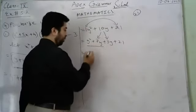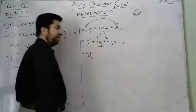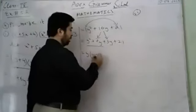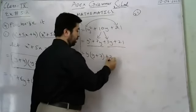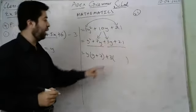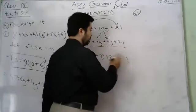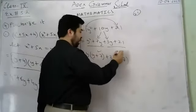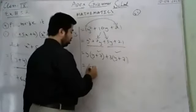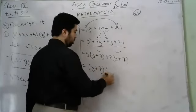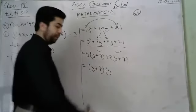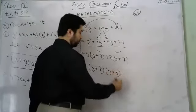Rewrite as y² plus 7y plus 3y plus 21. Take y common from the first two terms: y(y plus 7). Take 3 common from the last two: 3(y plus 7). Both groups share (y plus 7), giving (y plus 7)(y plus 3).